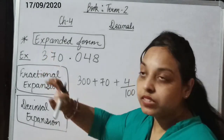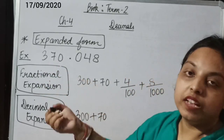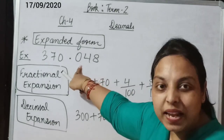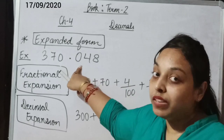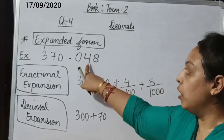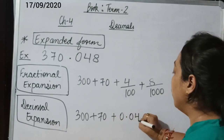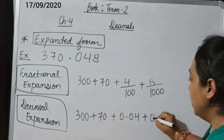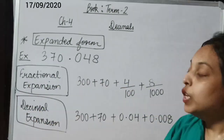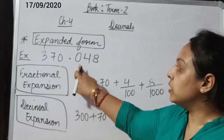Now we write the decimal expansion for the same number 370.048. The whole part is 300 plus 70. We move to the decimal part: the first place is the 10ths place and it is 0, so no need to write it. We move to 4 at the 100ths place, so its decimal value is plus 0.04. And for the 1000ths place, it will be 0.008, because we have 8 at the 1000ths place. So these are the fractional and decimal expansions for the number 370.048.